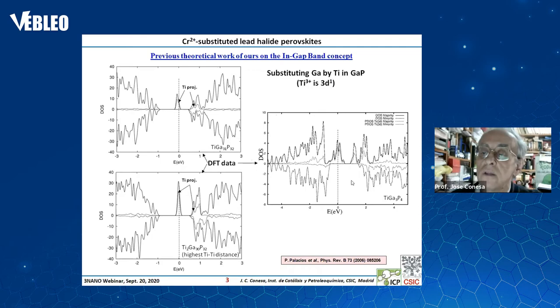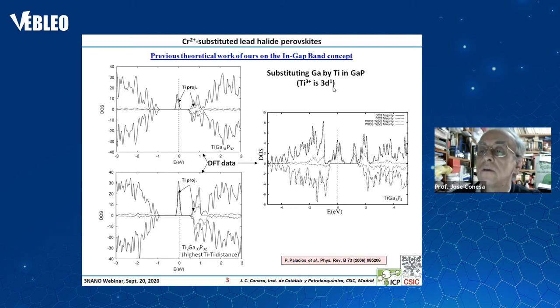However, it is necessary to take into account that when you increase the concentration, as would be the case here, you can get an overlap of the intermediate ingap band with the valence band, which would imply no special good effect. This is the case of substitution in gallium phosphide, which is a tetrahedral semiconductor.